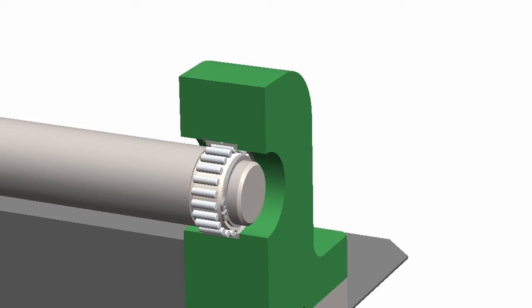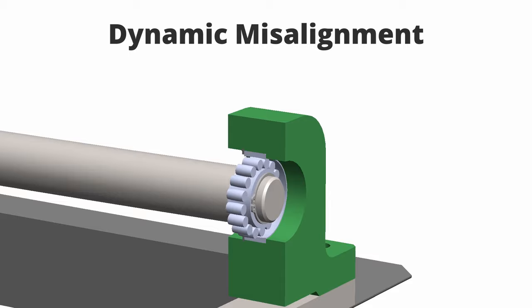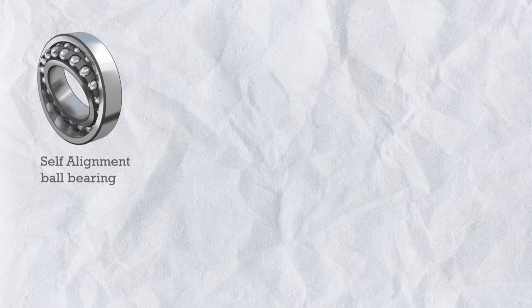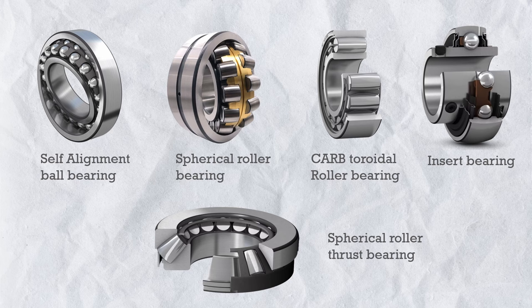Today we will understand all types of misalignment bearings — what bearings are used for misalignment conditions like axial misalignment, angular misalignment, or combinations like dynamic misalignment. The bearings we use include self-aligning ball bearings, spherical roller bearings, CARB toroidal bearings, and insert bearings. For axial loading with misalignment, there is also the spherical roller thrust bearing. For better understanding, we will first cover types of misalignment, then select the appropriate bearing.